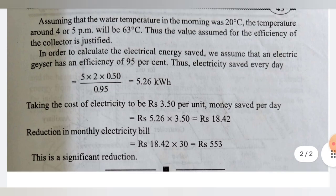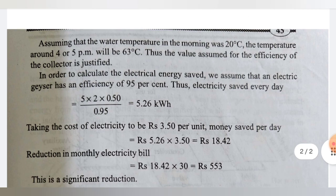Assuming the water temperature in the morning was 20 degrees Celsius, the temperature around 4 to 5 pm will be 63 degrees Celsius. Thus the value assumed for the efficiency of the collector is justified.